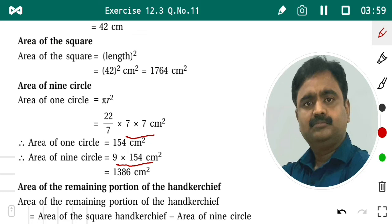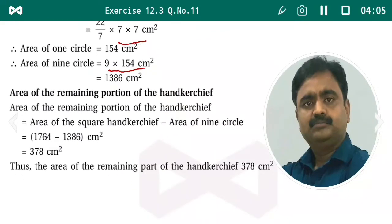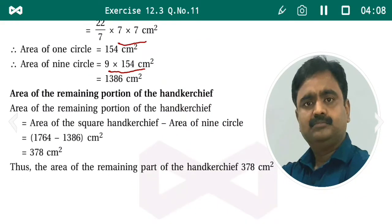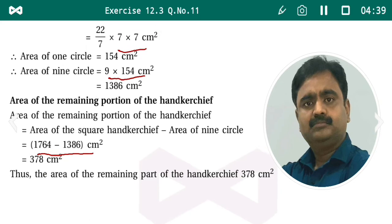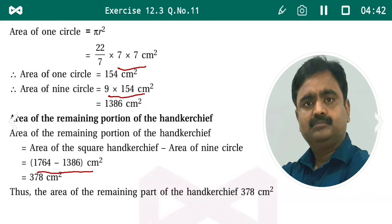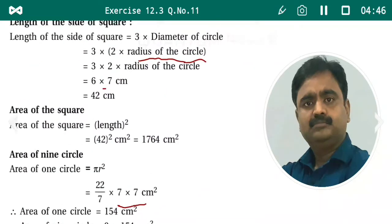Now we find the area of the remaining portion of the handkerchief. The formula is: area of square handkerchief minus area of nine circles = 1764 − 1386 = 378 centimeter square. So the answer to this question is that the area of the remaining part of the handkerchief is 378 centimeter square.